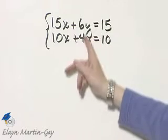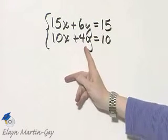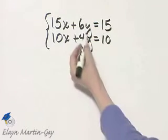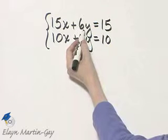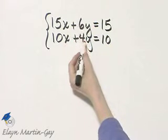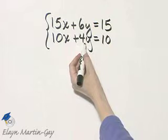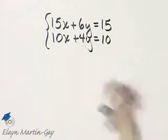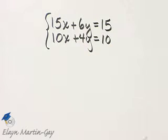Let's suppose I want to eliminate the y terms. If I multiply the top equation by 2 and the bottom equation by negative 3, the coefficients will be opposites of each other.